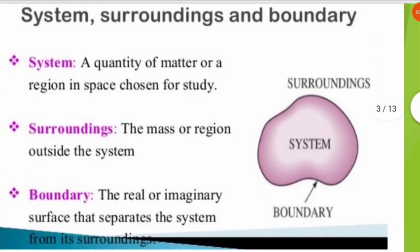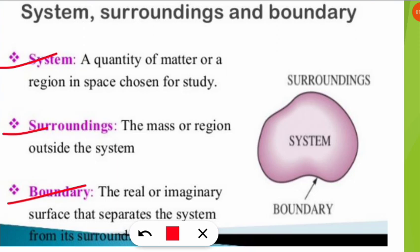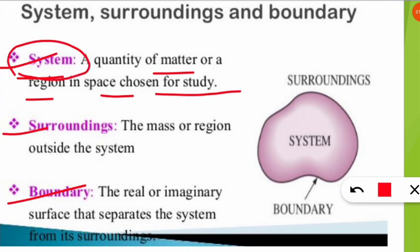For UGC NET environmental science, we should be clear about the basics. In this slide we will know about the system, surroundings, and boundary — three key terminologies in thermodynamics. A system is a quantity of matter or a region in space chosen for study. For example, the boiling of water can be a system, or you can take the whole earth as the system.